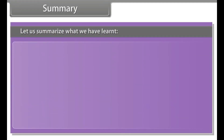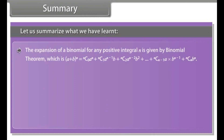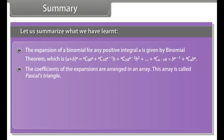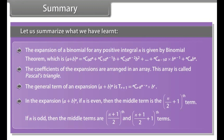Summary: Let us summarize what we have learned. The expansion of a binomial for any positive integral n is given by the binomial theorem. The coefficients of the expansions are arranged in an array called Pascal's triangle. The general term of an expansion is Tᵣ₊₁. In the expansion of (a + b)ⁿ, if n is even, the middle term is the (n/2 + 1)th term; if n is odd, the middle terms are the ((n+1)/2)th and ((n+1)/2 + 1)th terms.